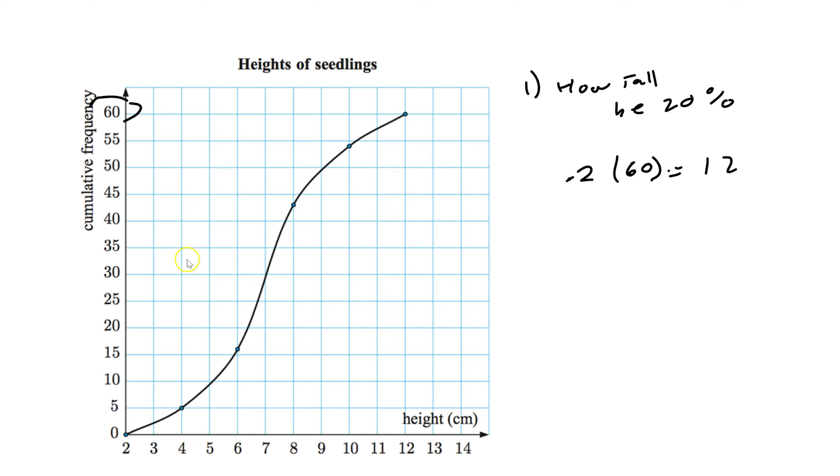So what we're going to do is we're going to go here to 12, under frequency, say about the 12th value. Then you go across. Again, remember, the question was how tall, not how many seedlings. So you either go across and go down. Now let's just say it's about 5.4 centimeters. So that's how we do a problem to ask you for percentile.